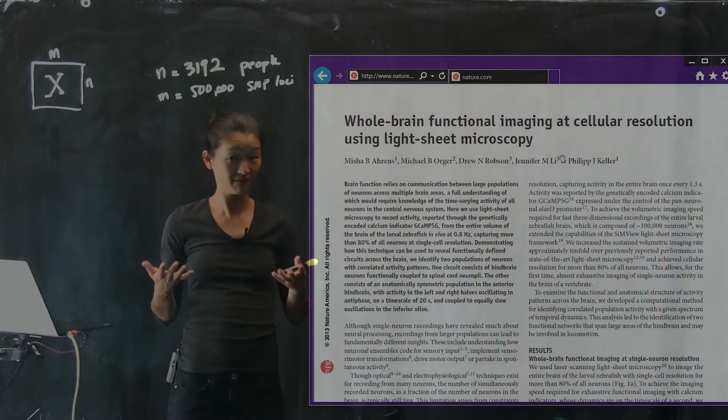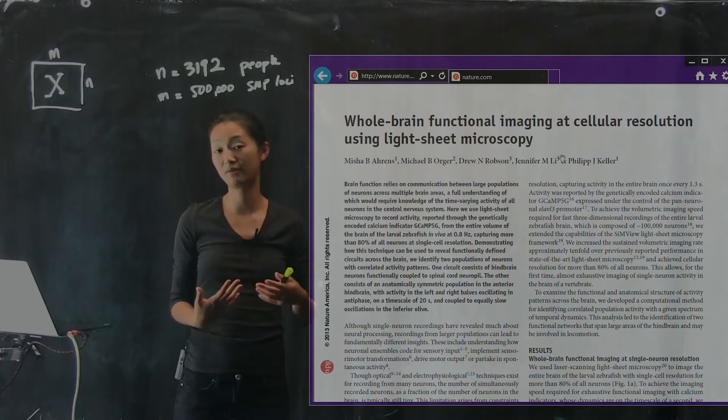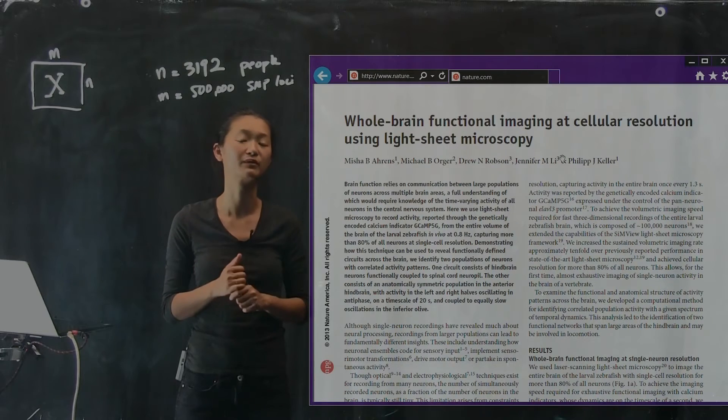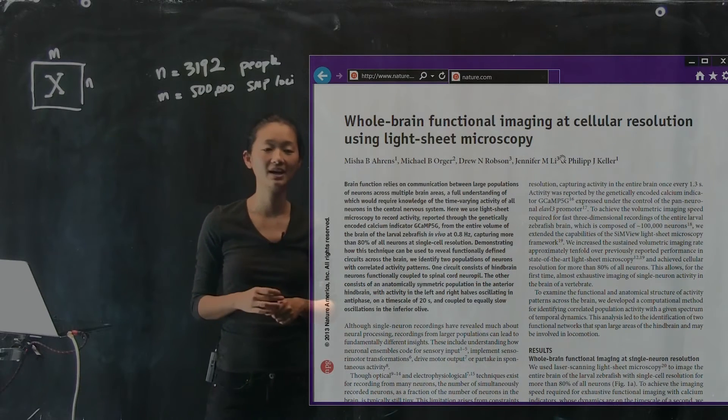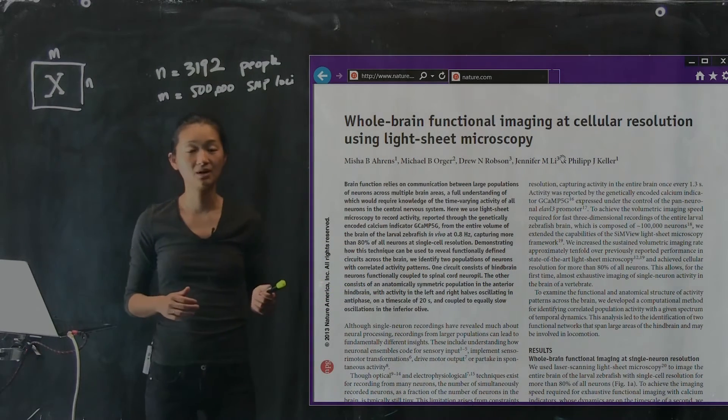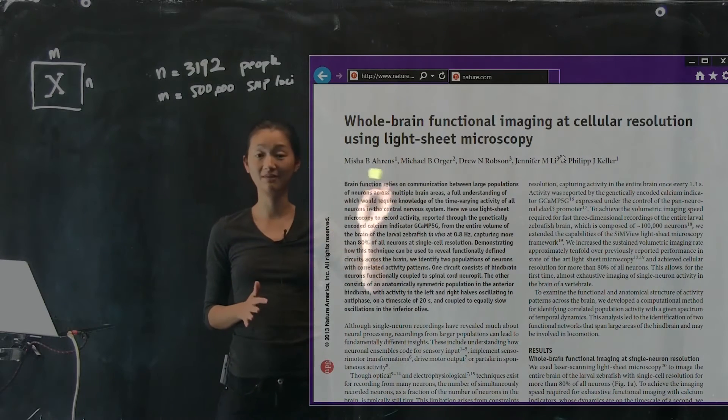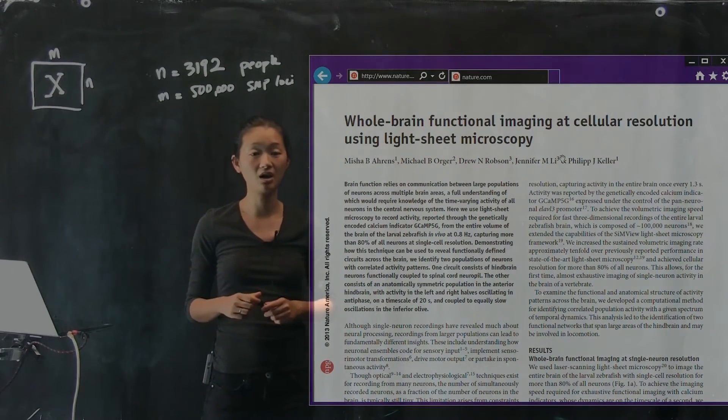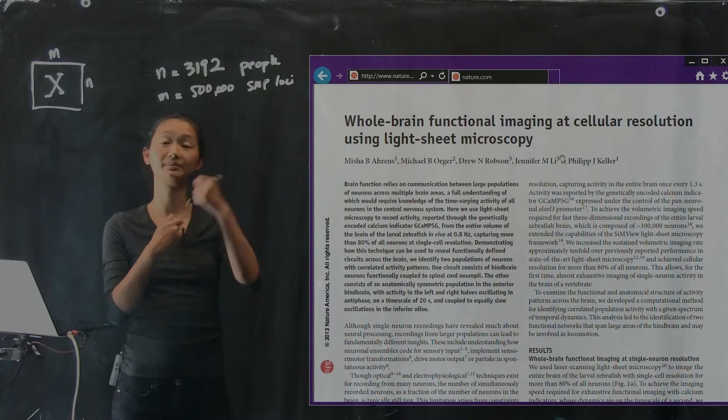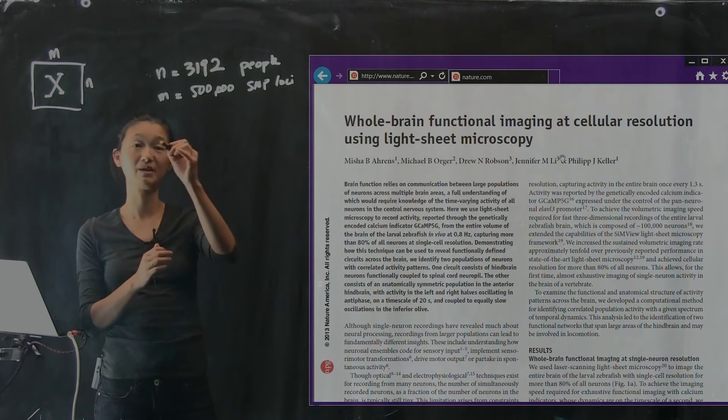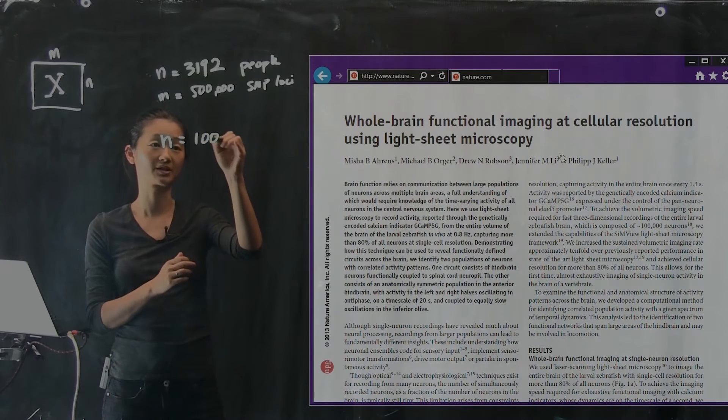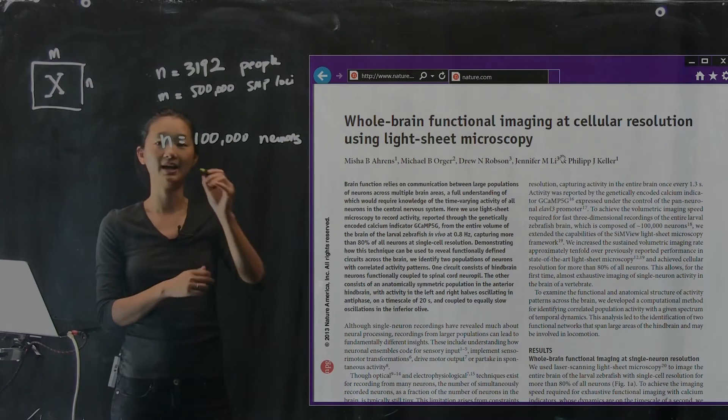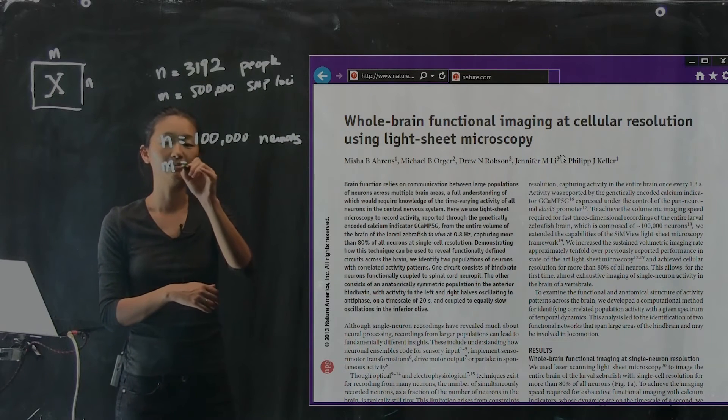So light sheet microscopy is this new technique where they can use a clever imaging trick along with a special model organism in order to see the cellular activity of every single neuron inside a complete vertebrate animal. So their model system is a larval zebrafish. And because it's in a larval state, it has a special property that it's practically transparent, which is really wonderful for imaging analyses.